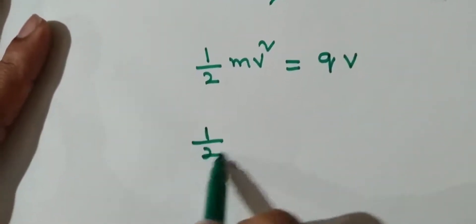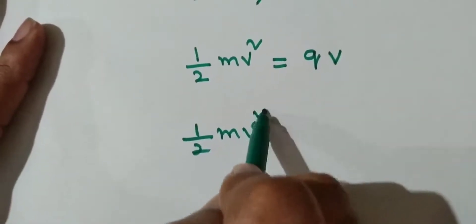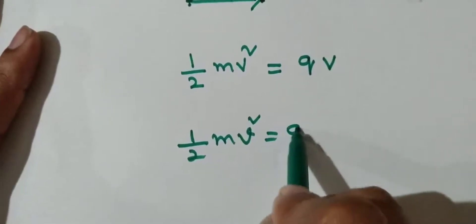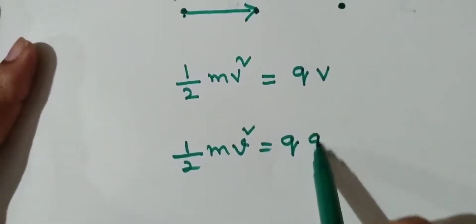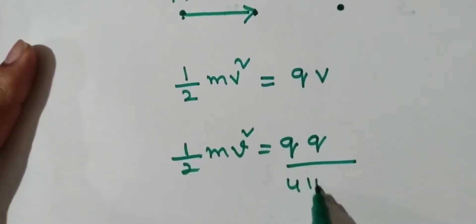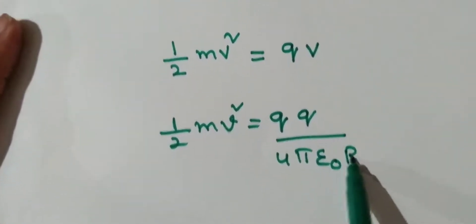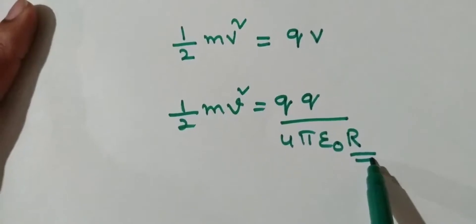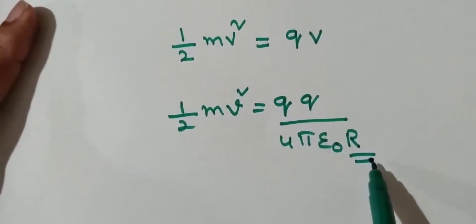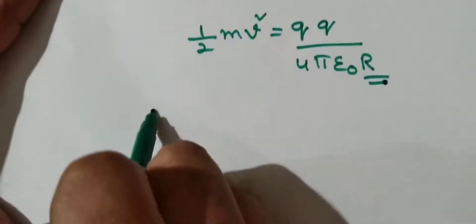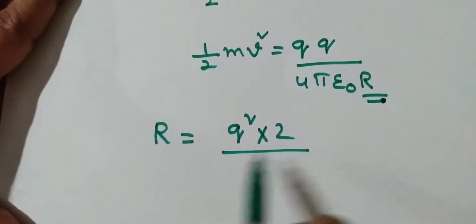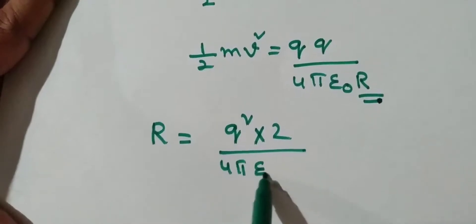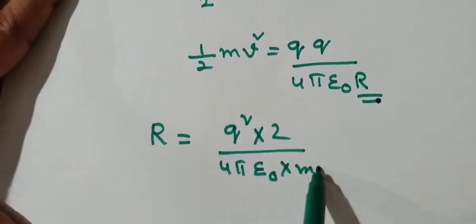One half mv square, where v is velocity, equals Q into the potential formula Q by 4 pi epsilon naught r. Here r is the closest distance, or shortest distance. We have to calculate r. R is equal to Q square into 2 by 4 pi epsilon naught into mv square.